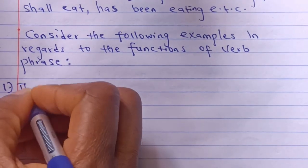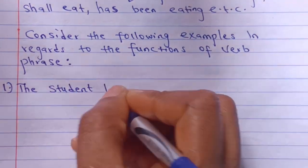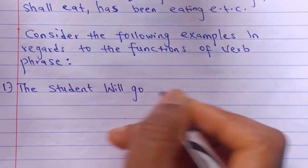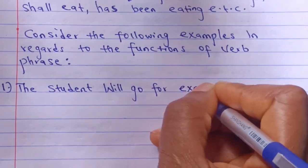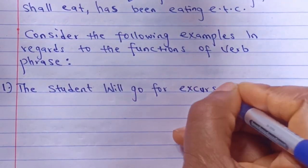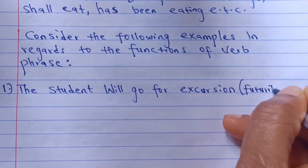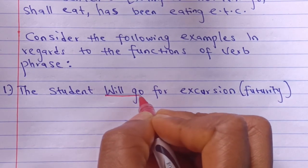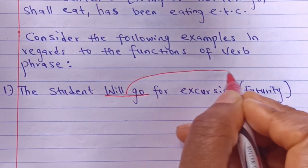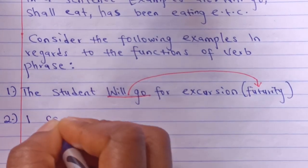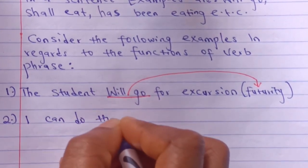Number one: The students will go for excursion. The verb phrase here is will go and it shows futurity.